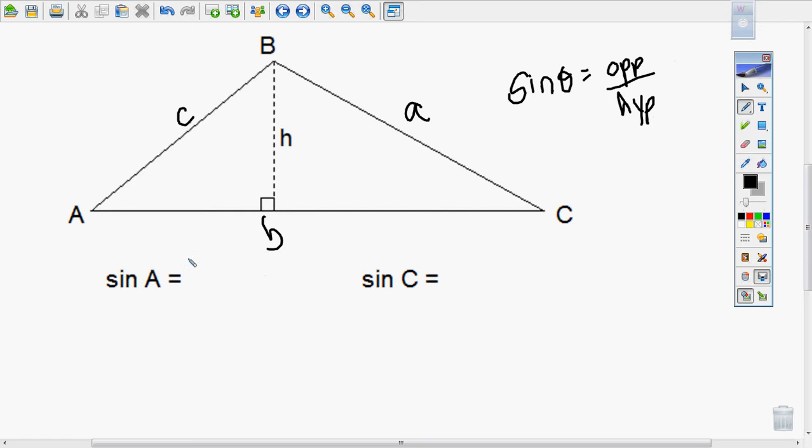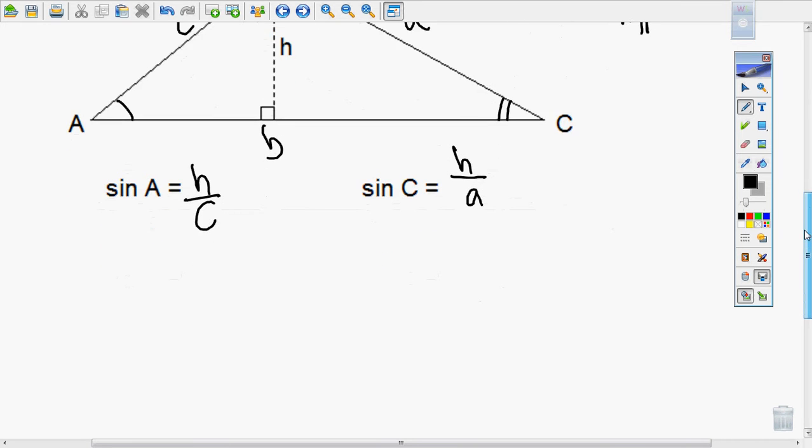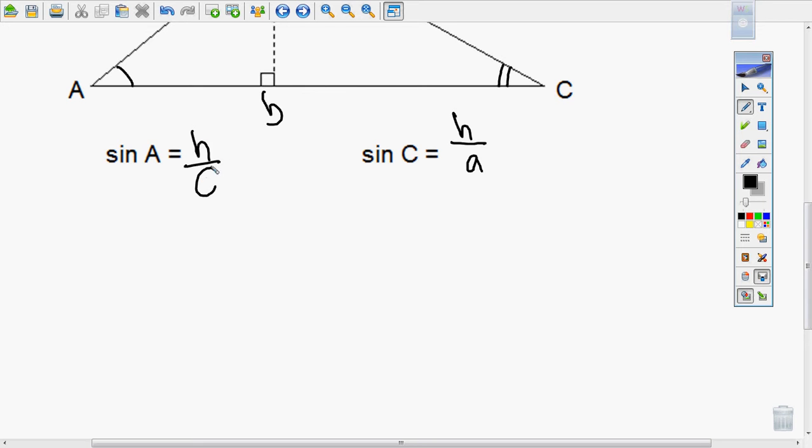Remembering that sine of an angle equals opposite over hypotenuse. The sine here would be focused at angle A. Its opposite is H, its hypotenuse is C. Focused here at angle C, its opposite is H, and its hypotenuse is A. In algebra 1, you learn that if two equations share a common variable, you can solve for that common variable and set it equal to each other.